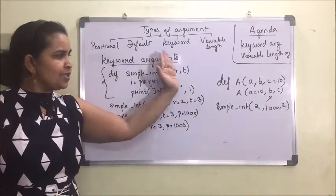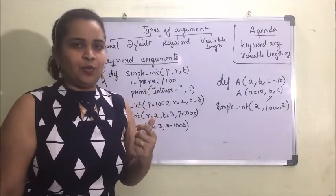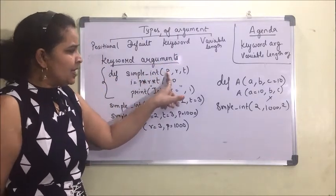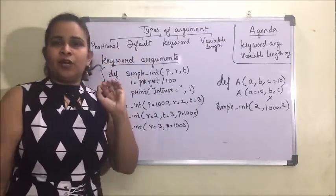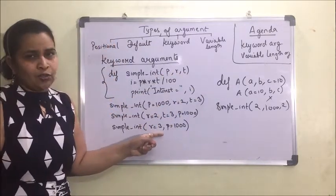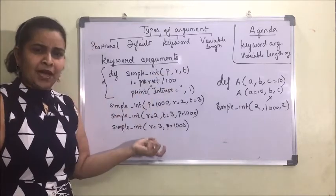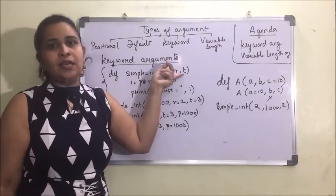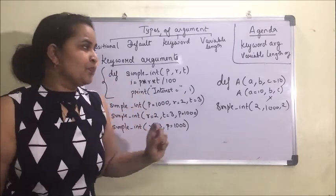If we are not able to remember the sequence of the parameters in the function, it will be difficult for us to send the arguments correctly. That is where keyword arguments help. In default and positional arguments, the parameter name doesn't need to match the argument name. But in keyword arguments, whatever name we use in the parameter must be the same name used in the argument.